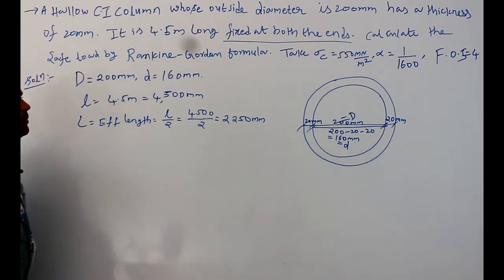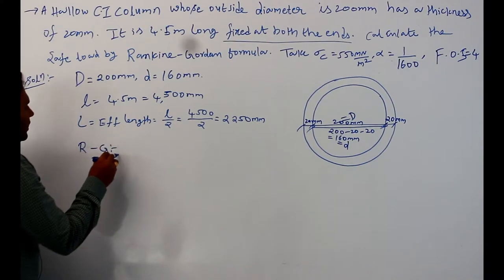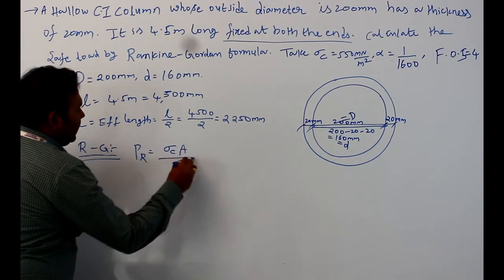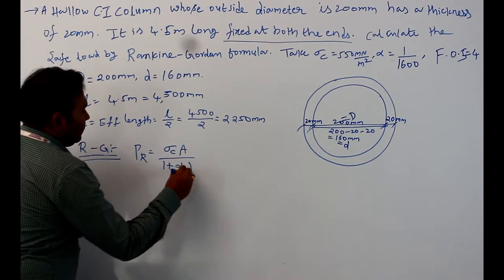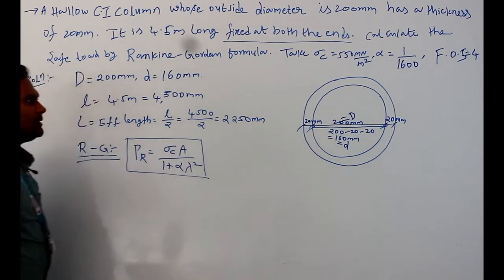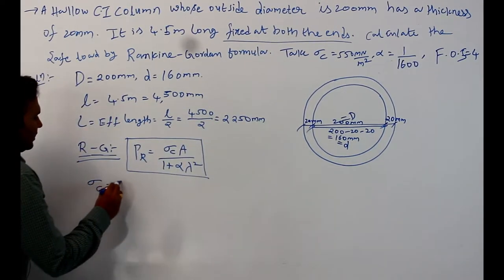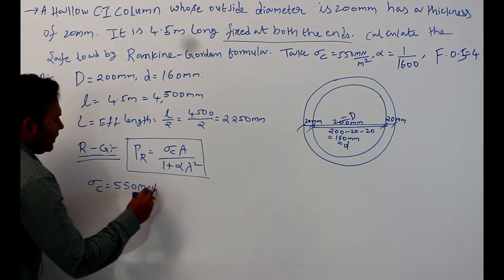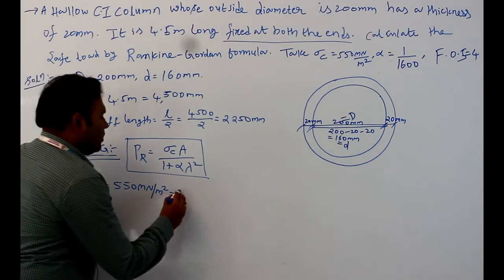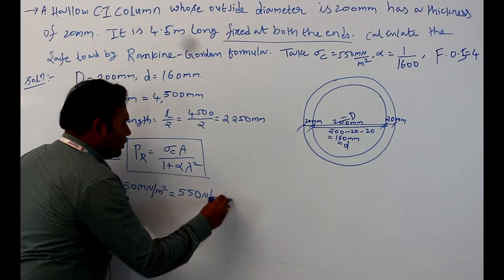Next, calculate the safe load using the Rankine-Gordon formula: P_R equal to sigma_c into A divided by 1 plus alpha into lambda squared. Sigma_c is given in the question as 550 mega newton per meter square, which is the same as 550 newton per mm square.